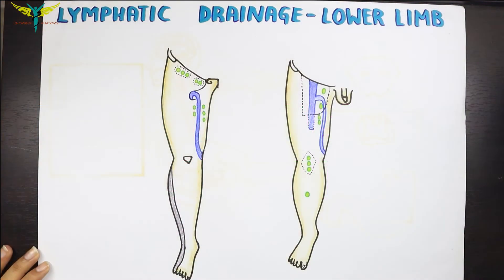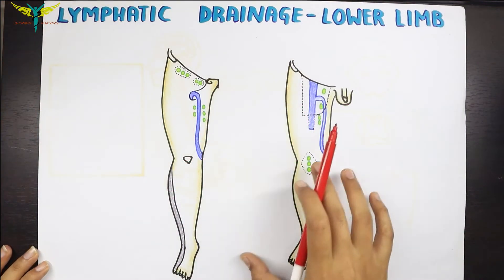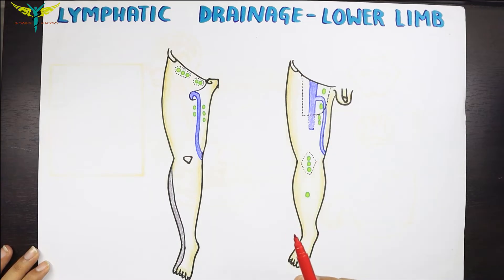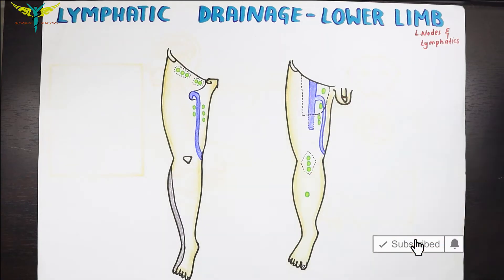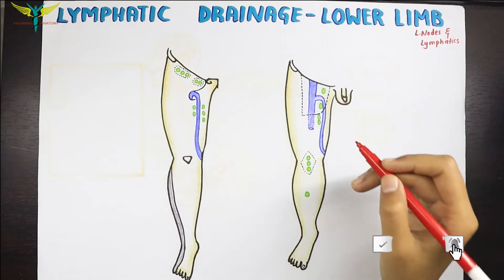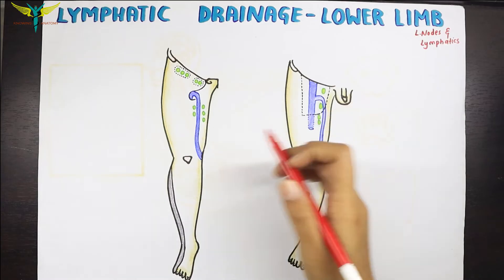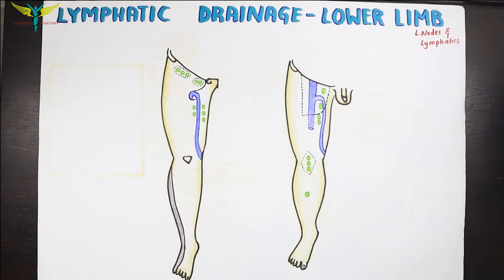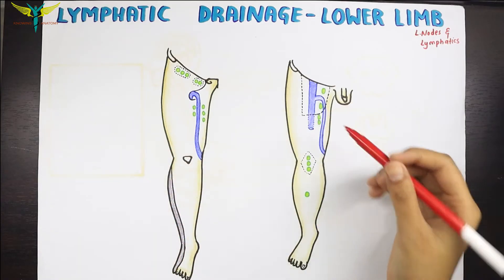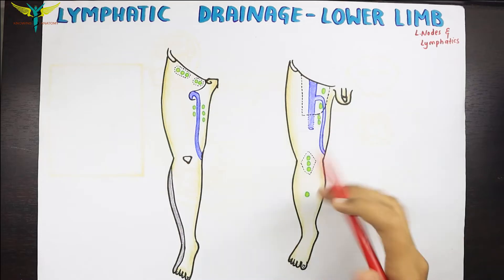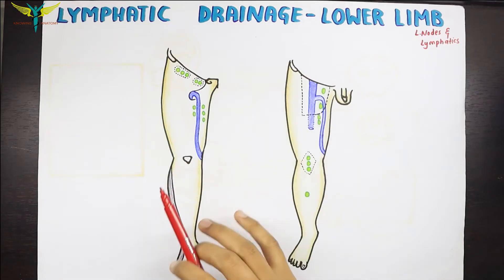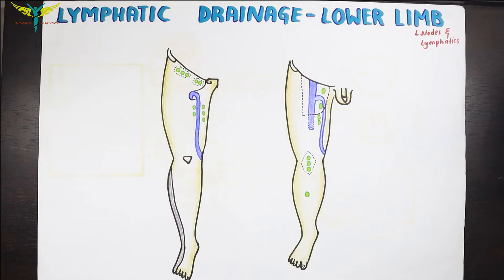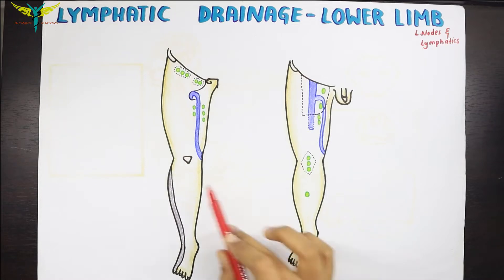The lymphatic drainage of the lower limb occurs by lymph nodes and the lymphatics. This lymph drainage of the lower limb is very important from the clinical point of view because inflammatory lesions of the limb cause painful enlargement of the lymph nodes, whereas the blockage of the lymphatics by the microfilarial parasites leads to massive edema of the lower limb.